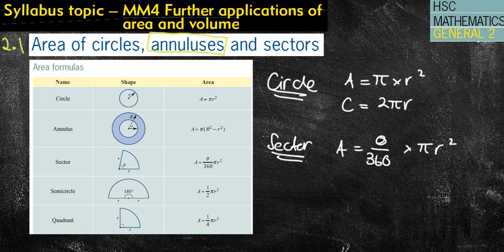To be honest with you, you don't need to remember semicircle and quadrant, because a semicircle is 180 over 360, hence why it's a half. And the quadrant is 90 over 360, hence why it's a quarter. You should know those already.